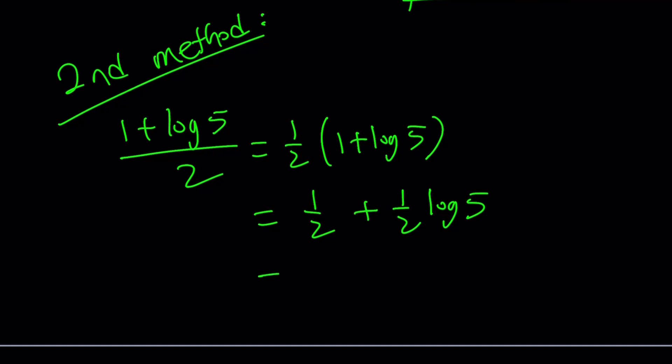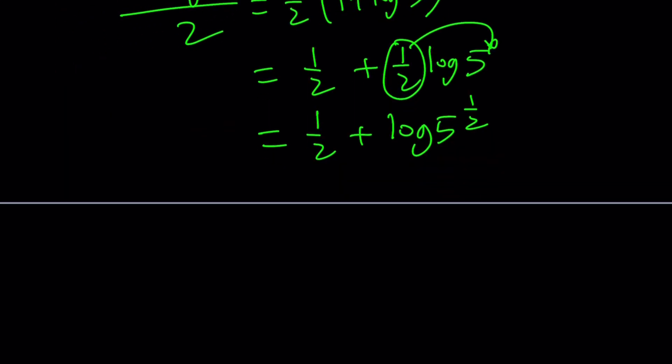Now log 5, 1 half log 5 can be written as log 5 to the power 1 half because this 1 half can be moved and made an exponent. And then we can go ahead and write the 1 half as log 10 to the power 1 half because it's like 1 half times log 10 plus log 5 to the power 1 half. So we kind of have like two half powers.